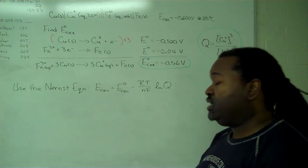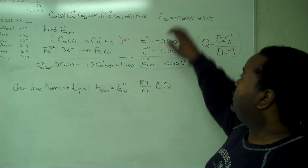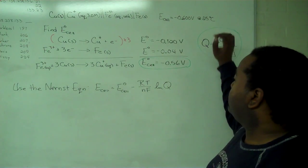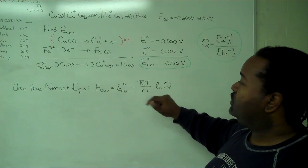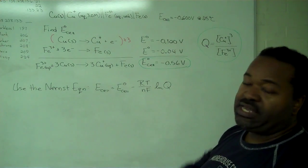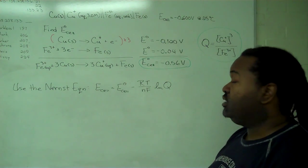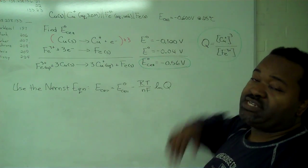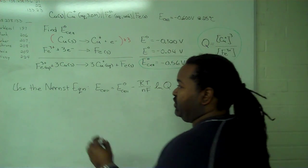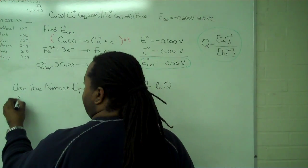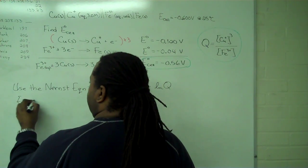And because we have a value for E cell and E cell standard, a form for Q, we have the temperature, the number of electrons used, gas constant and Faraday's constant, we can actually step through this entire thing. And because many reactions are listed as happening at 25 degrees Celsius, we have a simplified version that we can use.